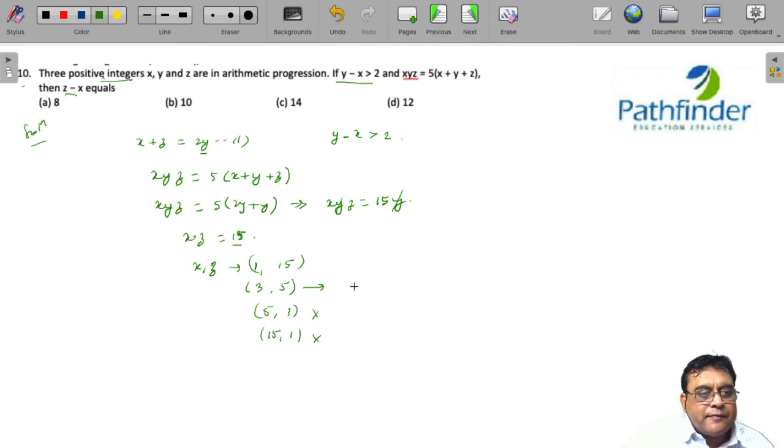If x equals 3 and z equals 5, then x plus z equals 8, which equals 2y, so y equals 4. But we are told that y minus x must be greater than 2. Y cannot equal 4 if x is 3, because y minus x would only be 1.